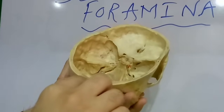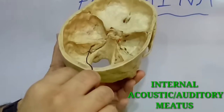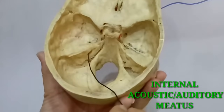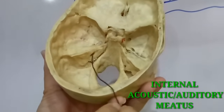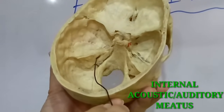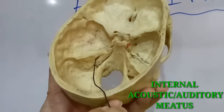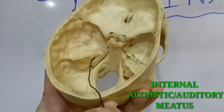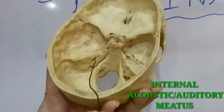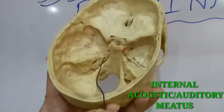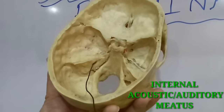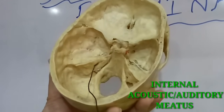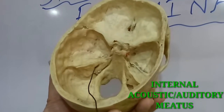In the posterior cranial fossa, we can see the internal acoustic meatus, or internal auditory meatus, which gives passage to the facial nerve, vestibulocochlear nerve, and labyrinthine vessels. The facial nerve is the seventh cranial nerve, which enters the middle ear via the internal acoustic meatus along with the vestibulocochlear nerve.